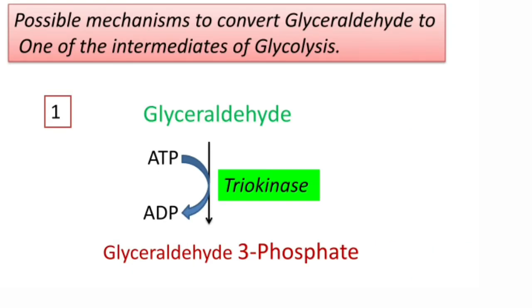Coming to the possible mechanisms: the first one is glyceraldehyde is converted into glyceraldehyde-3-phosphate by the action of enzyme triokinase. This requires phosphate supplied by ATP. This is the principal route for the conversion of glyceraldehyde into glyceraldehyde-3-phosphate.